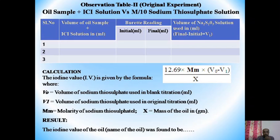Before starting the titration, record the initial burette volume. After titration, at the end point, record the final volume of sodium thiosulphate. Final volume minus initial volume gives the exact quantity of sodium thiosulphate used. Take three or more readings — more readings give a more accurate result, though three readings also give a reasonably accurate result.